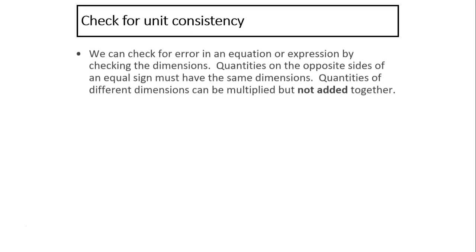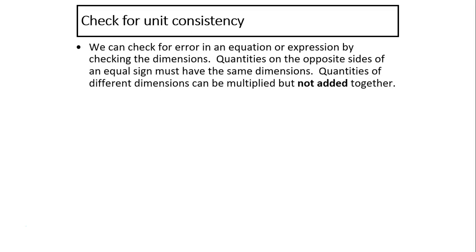First, let's check for unit consistency. We can check for error in an equation or expression by checking the dimensions. Quantities on the opposite sides of an equal sign must have the same dimensions. Quantities of different dimensions can be multiplied but not added together.